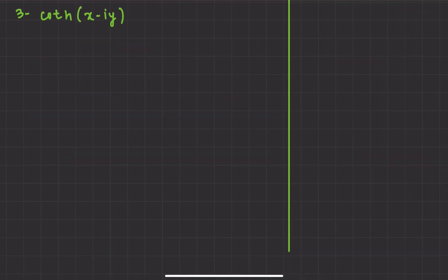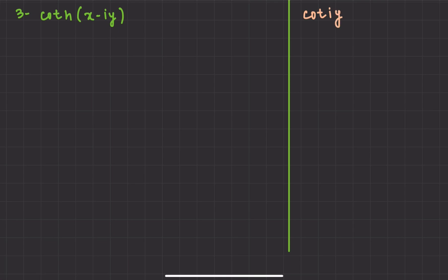Let's do the third part, which is coth(x − iy). Again, we cannot apply any cot identity here directly. We first need to simplify this. So let's understand how to simplify it.